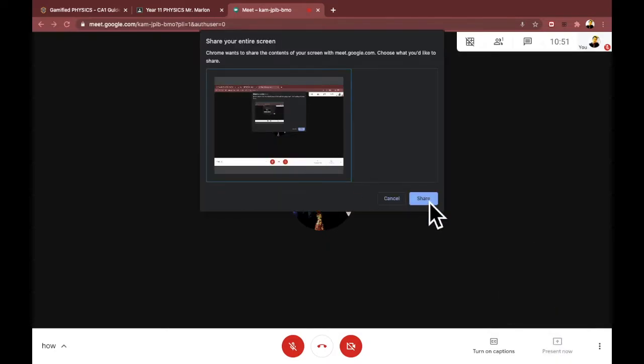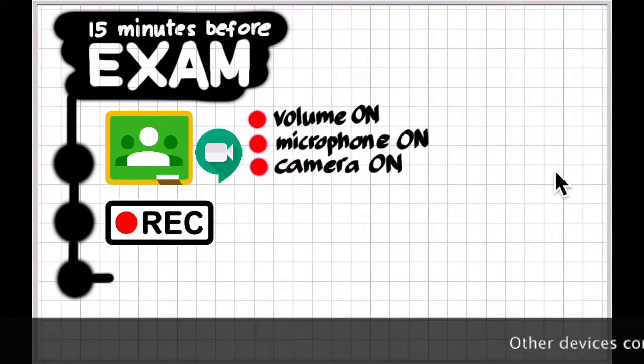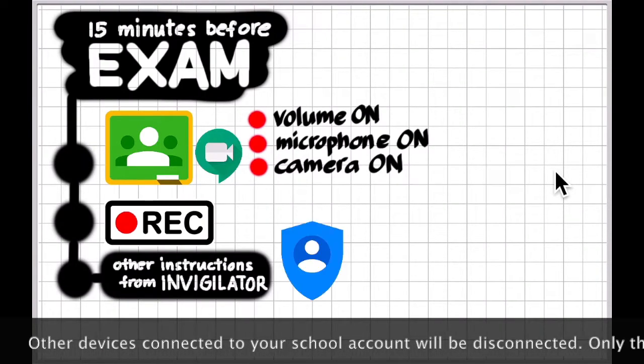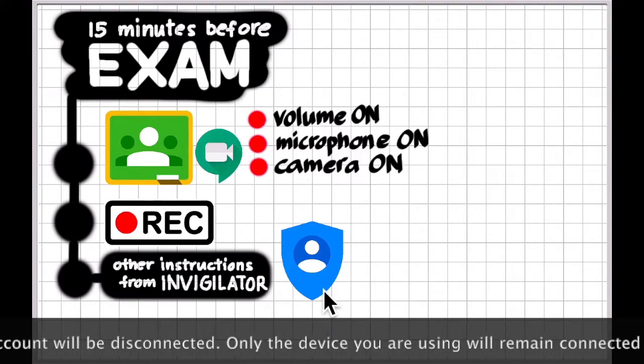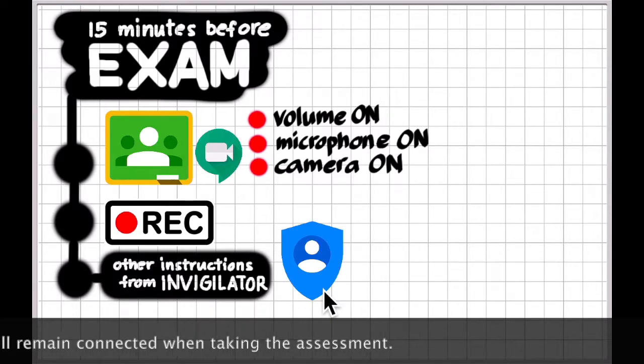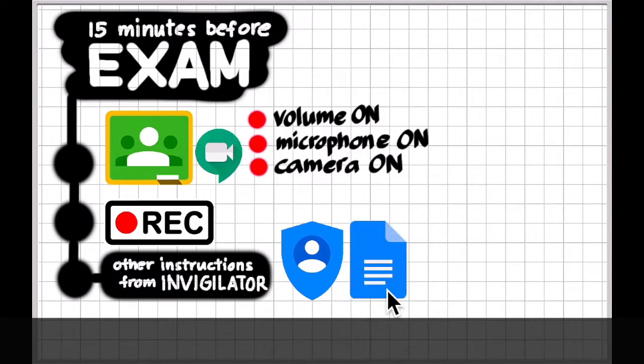While being recorded, other instructions will be given to you, like the one for the removal or disconnecting other devices from your SBA account. For primary students, it will be done by the G Suite administrator for you. For secondary and JC students, you will be guided by the invigilator on this.